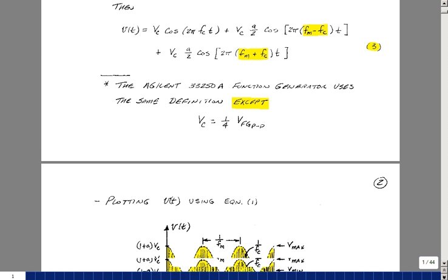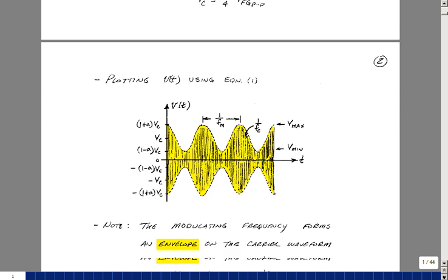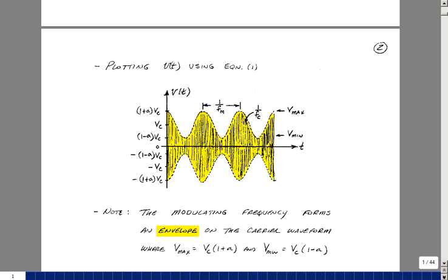Let's plot equation one. It has the following shape, again assuming that F_C is much, much greater than F_M. What you can see here is that there is an envelope on the top and on the bottom of F_C.